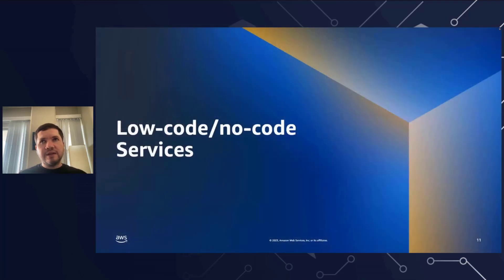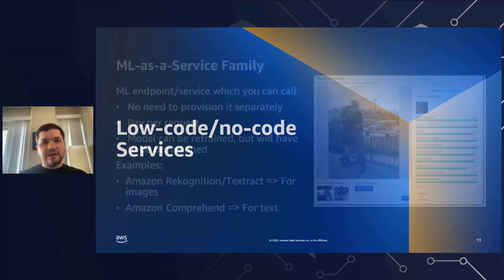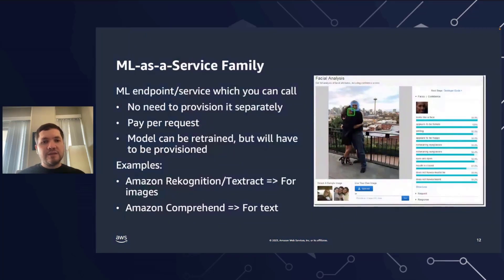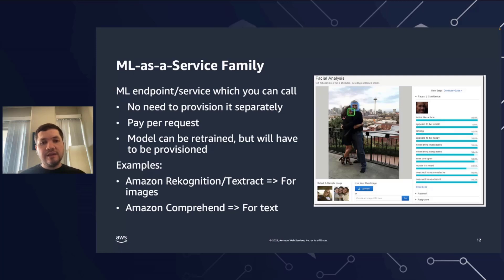First is the machine learning as a service tools family — effectively a machine learning endpoint or service which you can call. You don't need to provision it separately and you pay per request, which is great when you have a low volume of requests. The model can be retrained, but it will need to be provisioned separately. Examples here are Amazon Rekognition, Textract, and Amazon Comprehend.